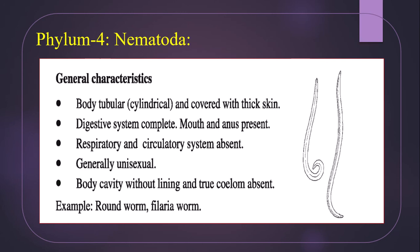The respiratory and circulatory systems are absent. They are generally unisexual, meaning male and female members are separate — two types of members are present in this group. The body cavity has no lining and a true coelom is absent.